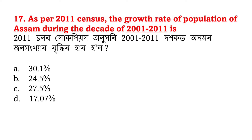Next question: As per the 2011 census, the growth rate of population of Assam during the decade of 2001 to 2011 is - 2011 sonor lukopiwal anuhari, 2001 to 2011 or dahokat omor zhanohinkhar vriddir har kimaan nasil. The answer is D - 17.07 percent.